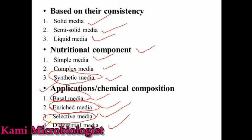Differential media is designed so that two, four, or five types of bacteria can grow, or it can differentiate bacteria as well as fungi. For example, SDA is a differential media on which only fungi can grow. MacConkey agar and EMB are differential media on which gram-positive and gram-negative bacteria can grow. Nutrient agar is also considered differential media on which both gram-positive and gram-negative bacteria grow.